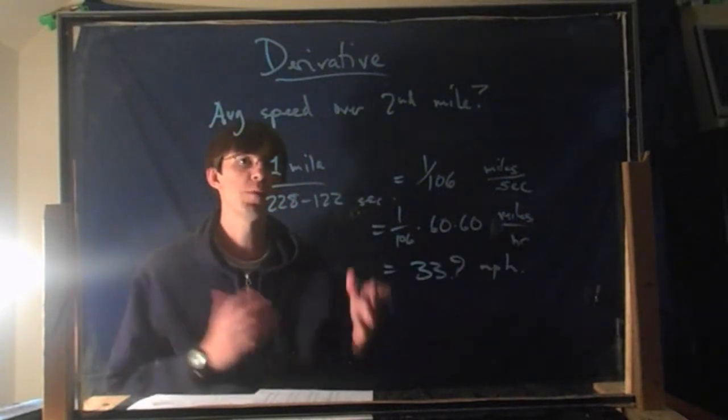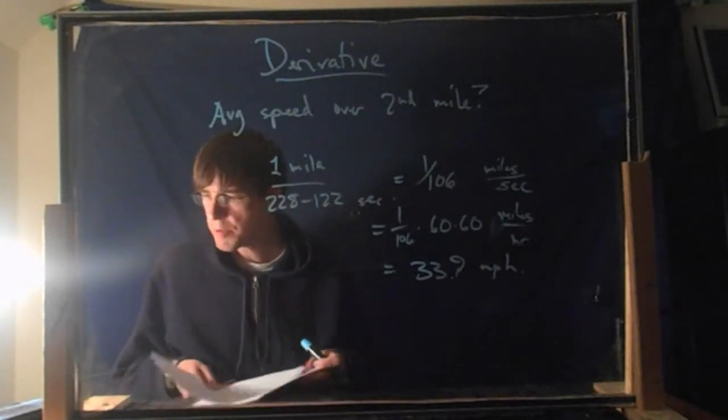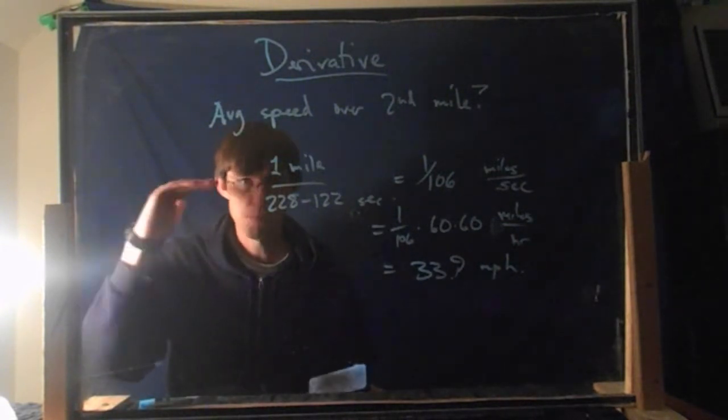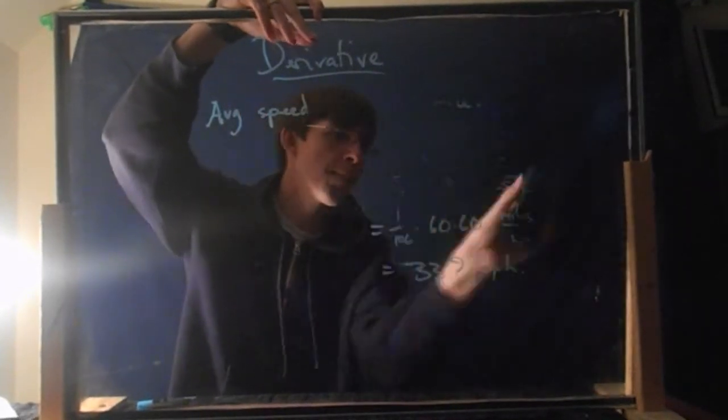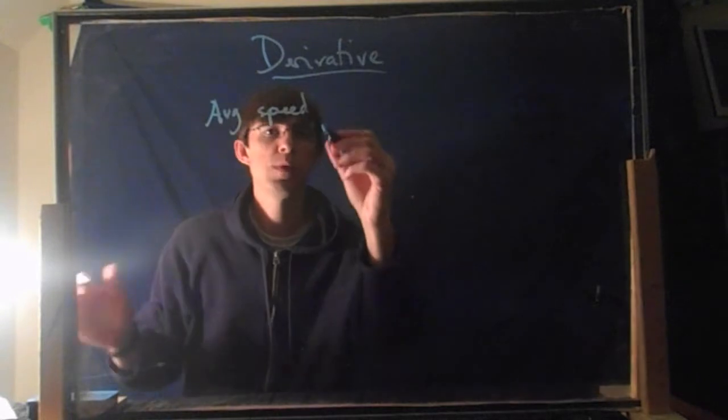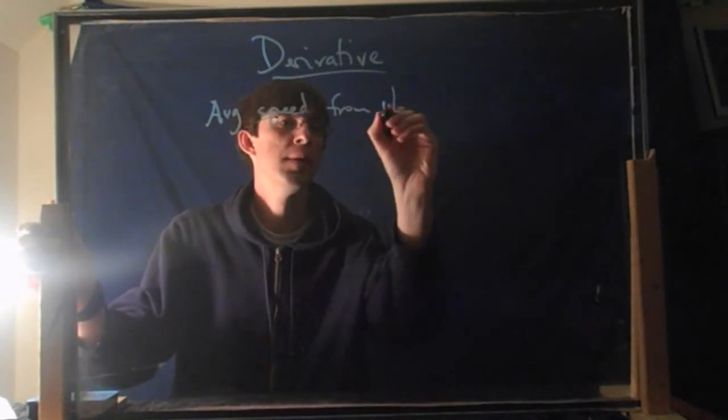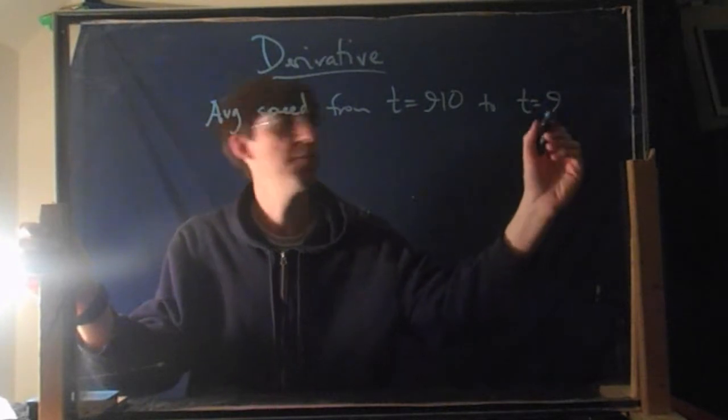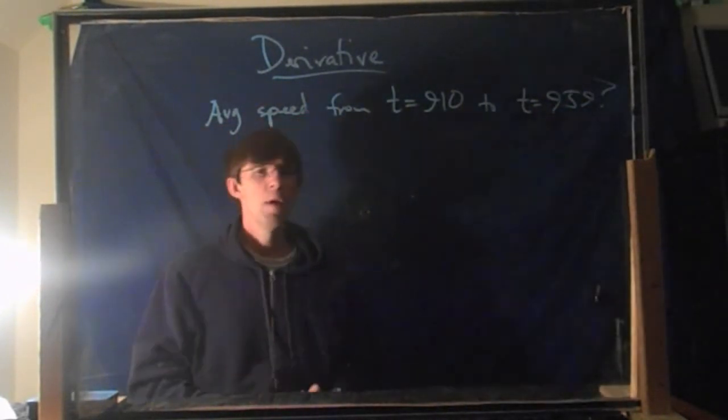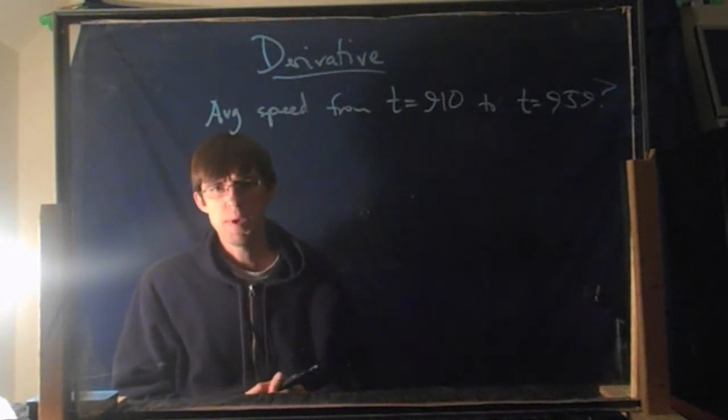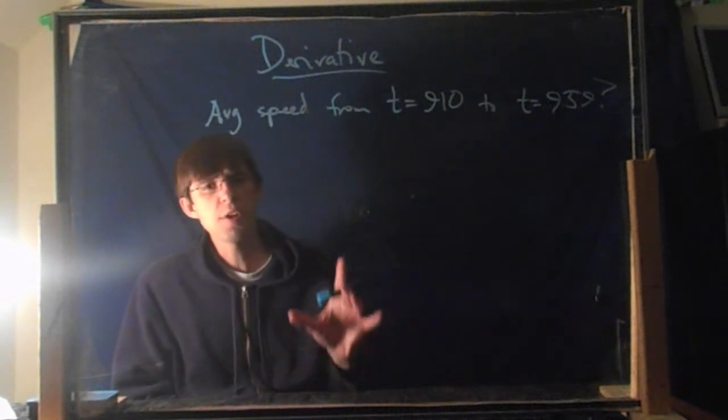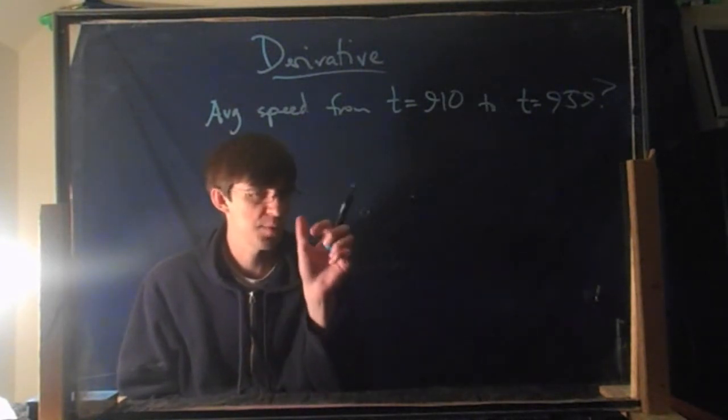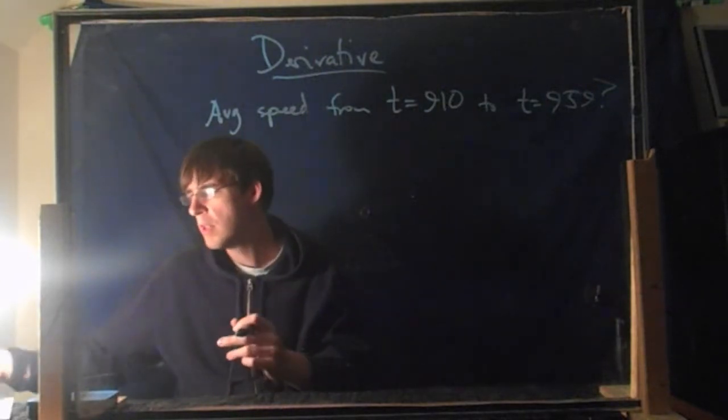I plugged this into my calculator. I got 33.9 miles per hour. Again, sounds pretty reasonable. So this is average speed over the second mile. Let's talk in general. I could ask you any old point along that sheet of data there. What was my average speed, say, from this moment to this moment? Let's do one like that. Let's say what's my average speed from time 910 seconds to time 959 seconds? I just more or less chose two random times on the paper there. You can still say what's the average speed from one to the other.